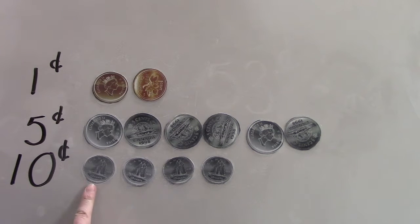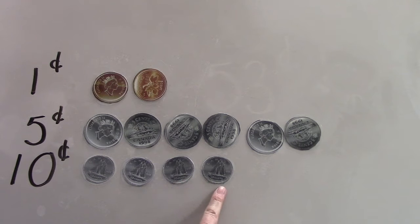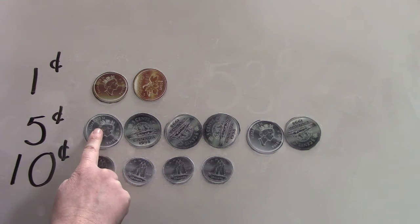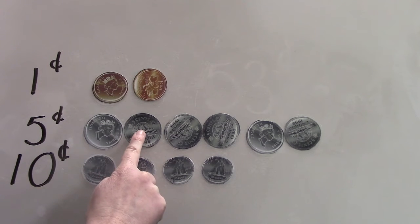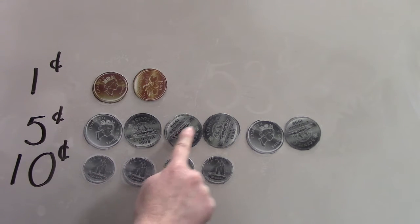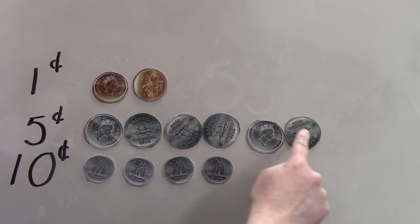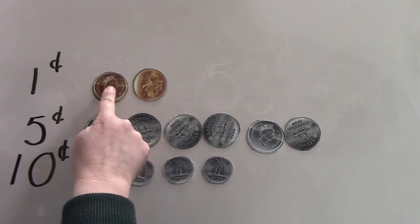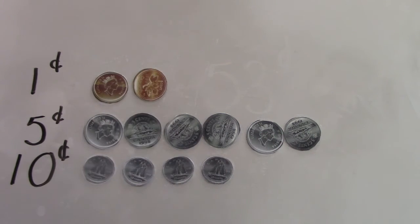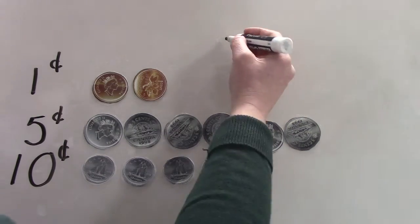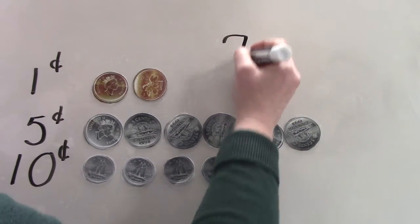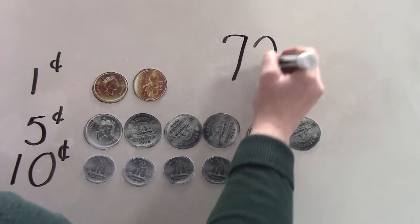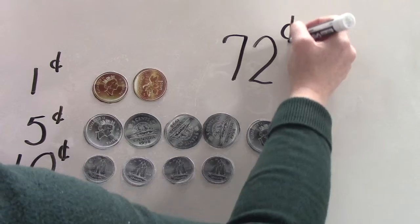Ten, twenty, thirty, forty, forty-five, fifty, fifty-five, sixty, sixty-five, seventy, seventy-one, seventy-two. So how much money do we have? We have 72 cents.